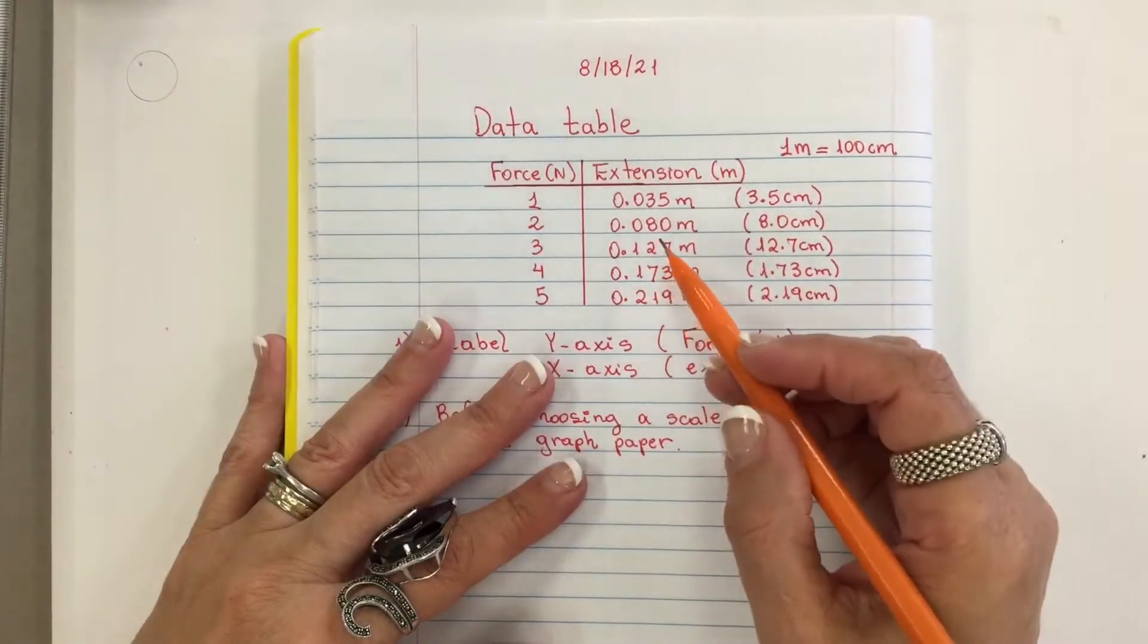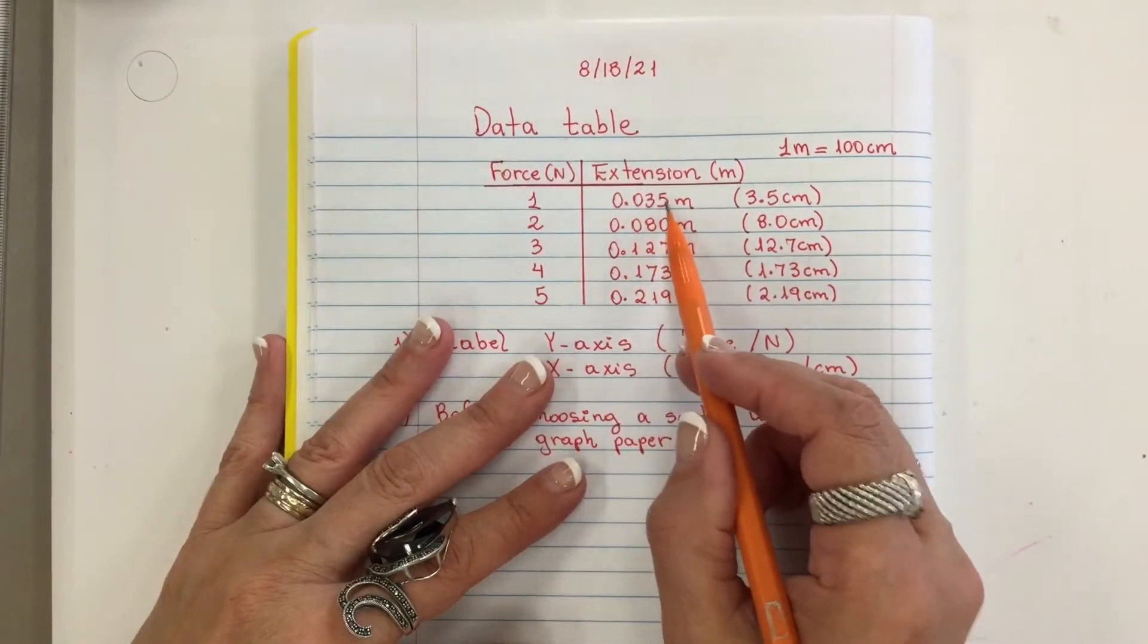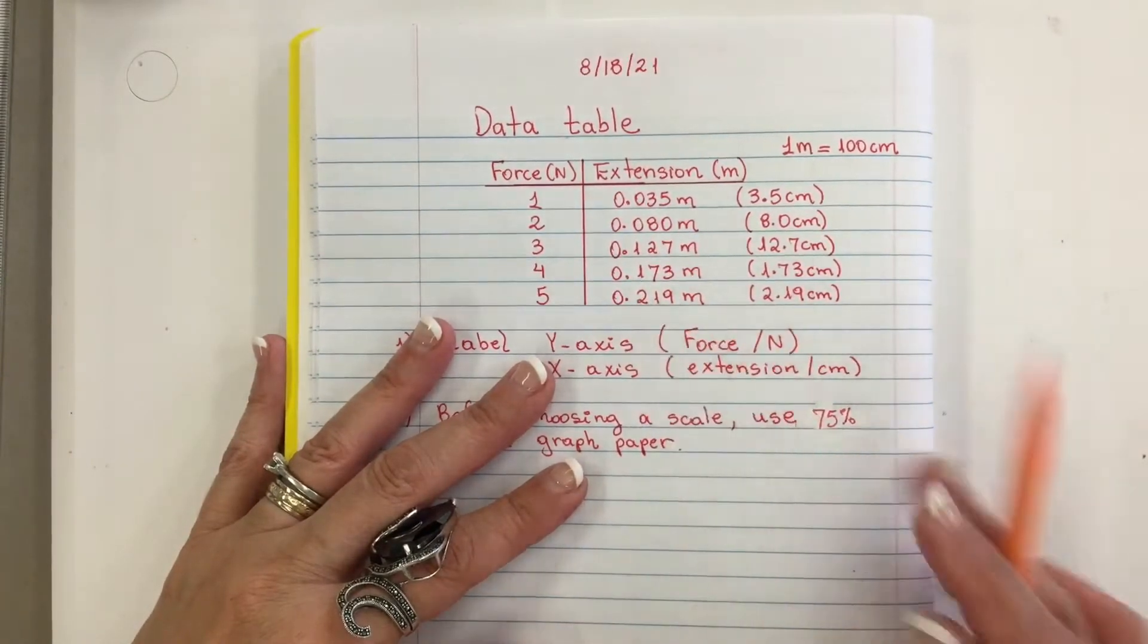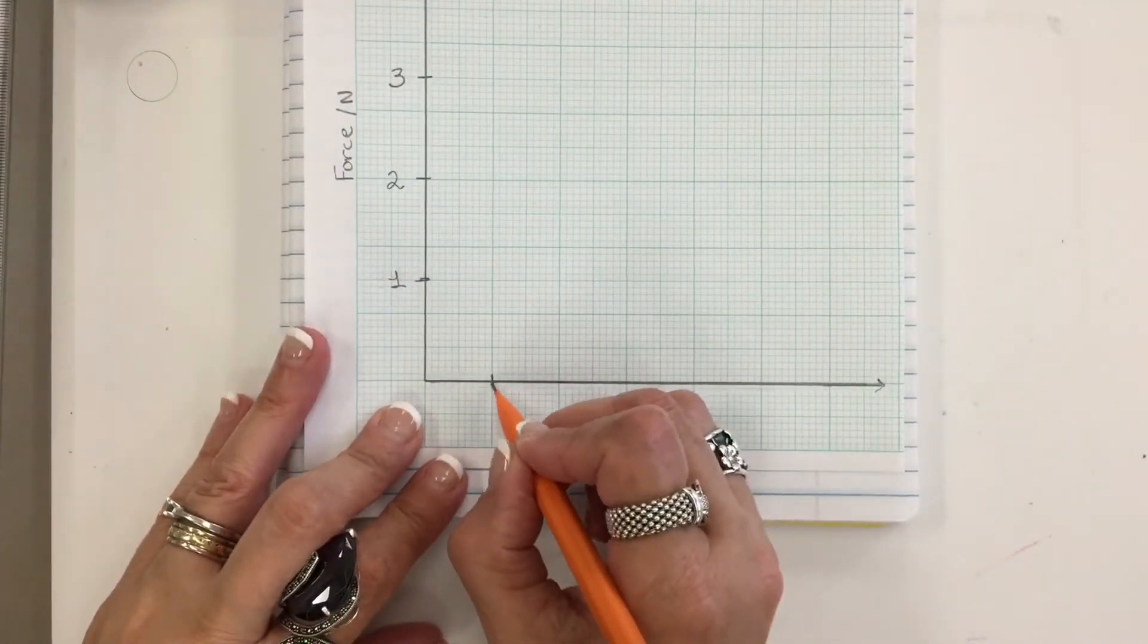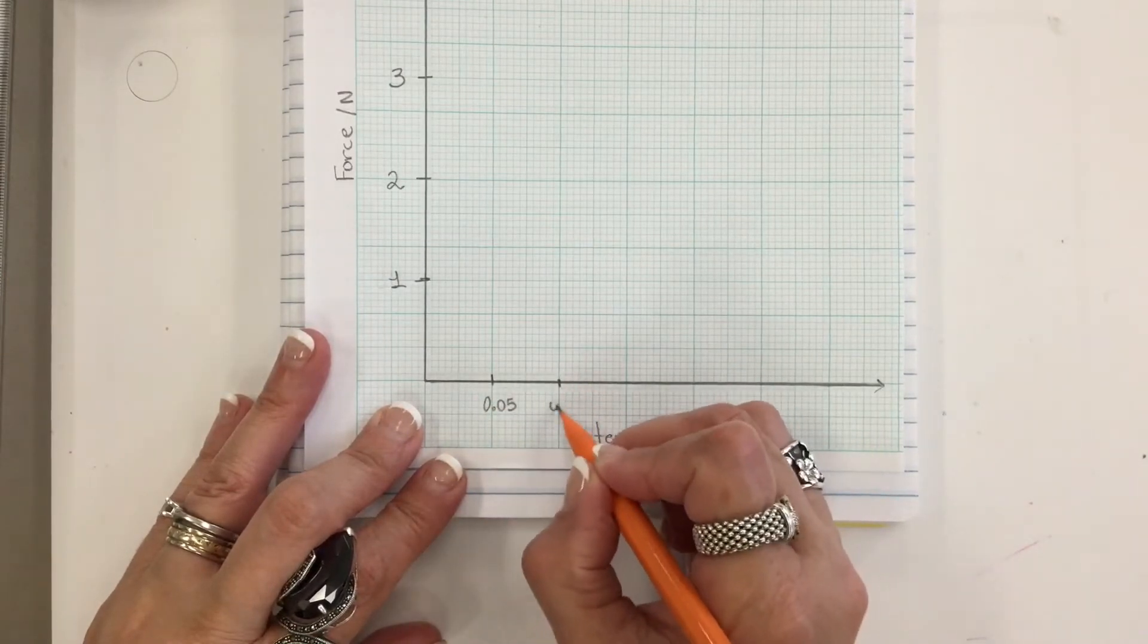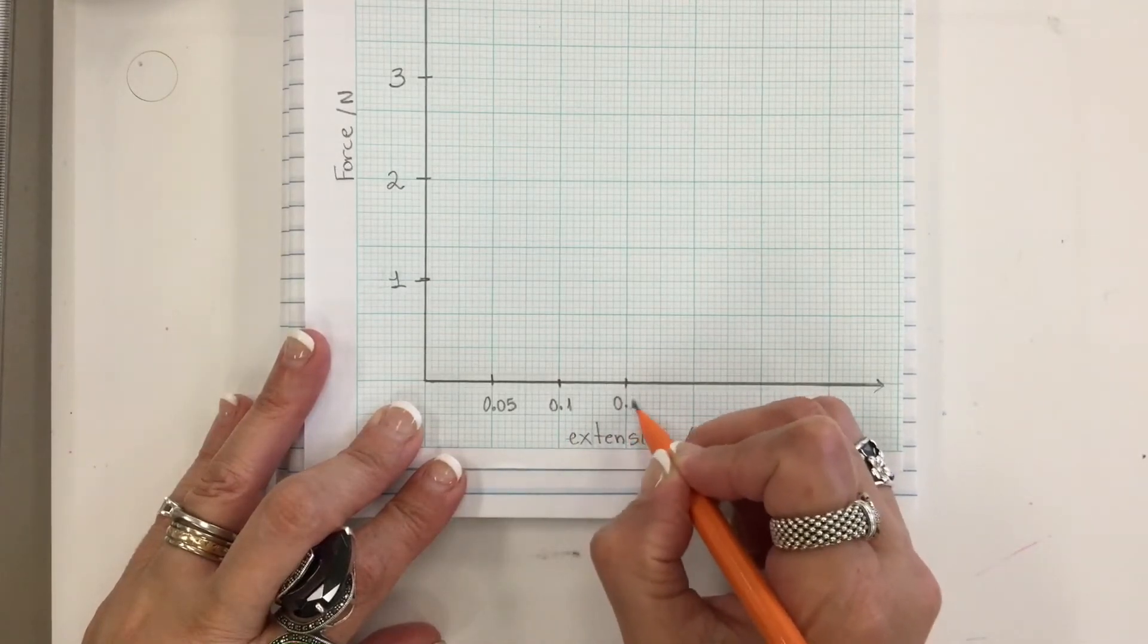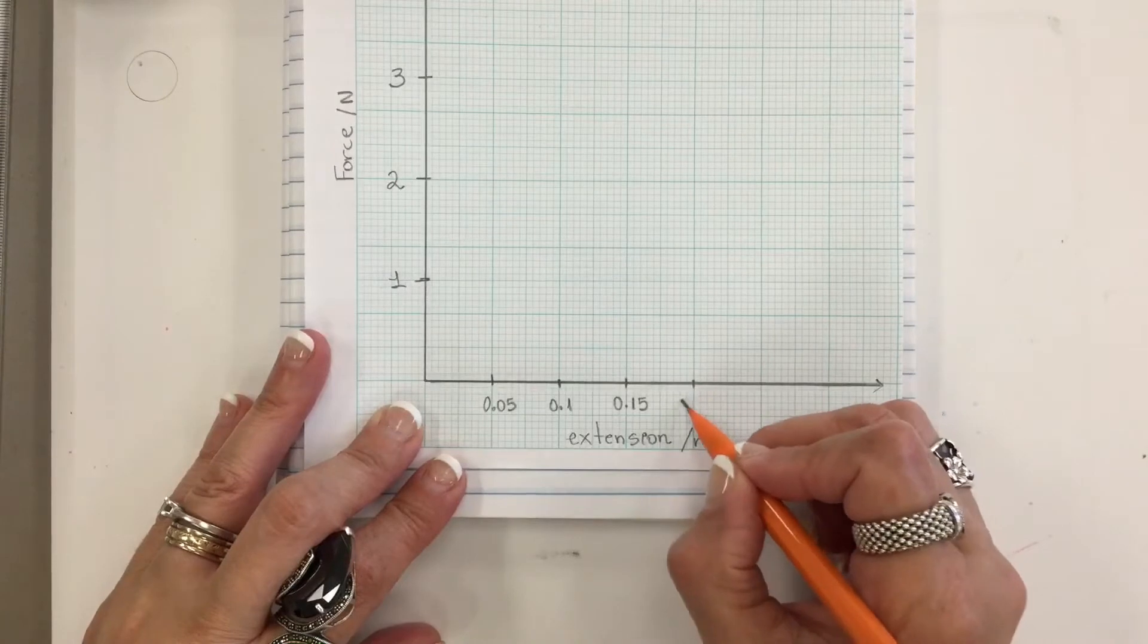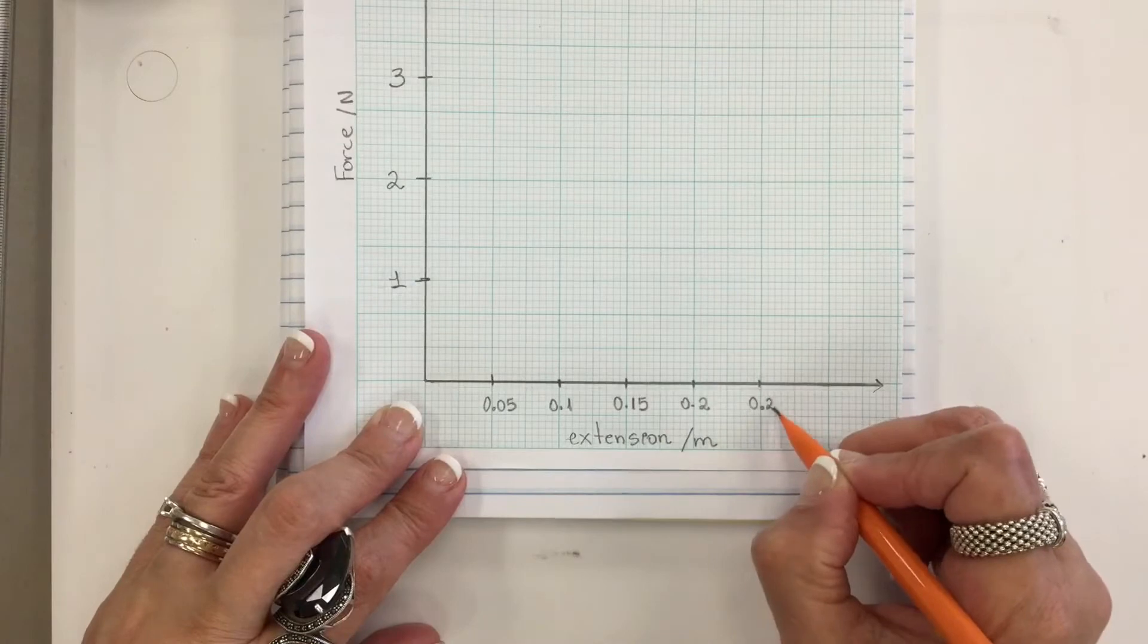For the x-axis, we have to look at this range from 0.035 to 0.2. So a good choice will be to make the first one 0.05, and this will be 0.1, 0.15, 0.2, and 0.25.